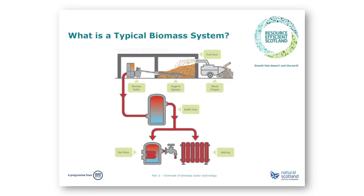A biomass system consists of a fuel reception area, a fuel store where the fuel must be kept dry, a fuel delivery mechanism for getting the fuel from the store to the boiler, the biomass boiler itself, and usually a buffer tank or heat store. The choice of boiler, fuel store, and delivery system all depend upon what type of biomass fuel is being burnt. One of the first and most important decisions when considering a biomass boiler system is what form of biomass fuel to use.